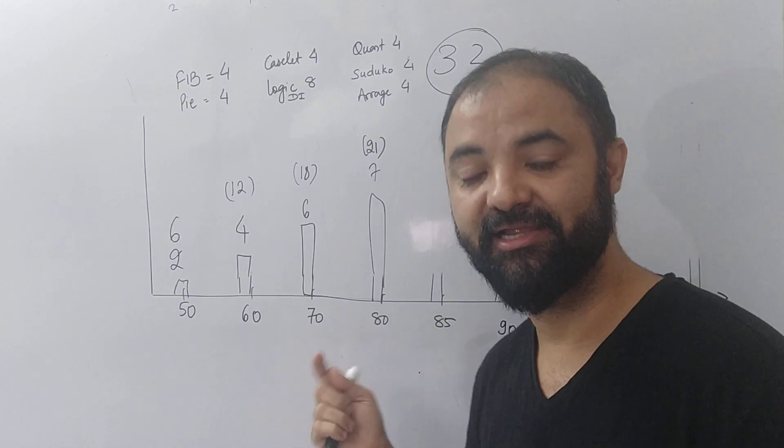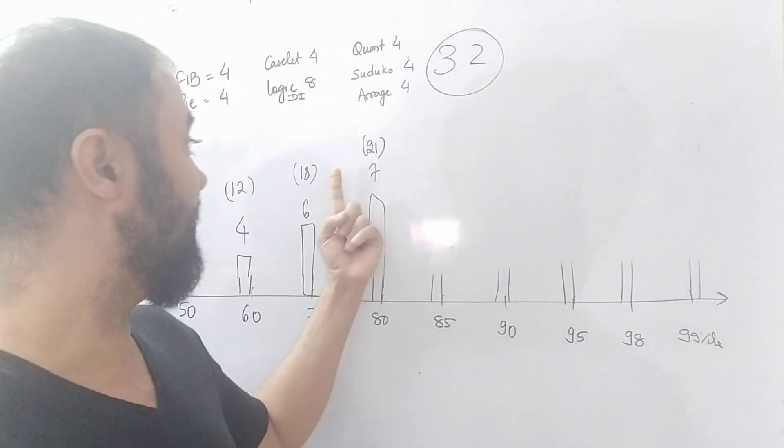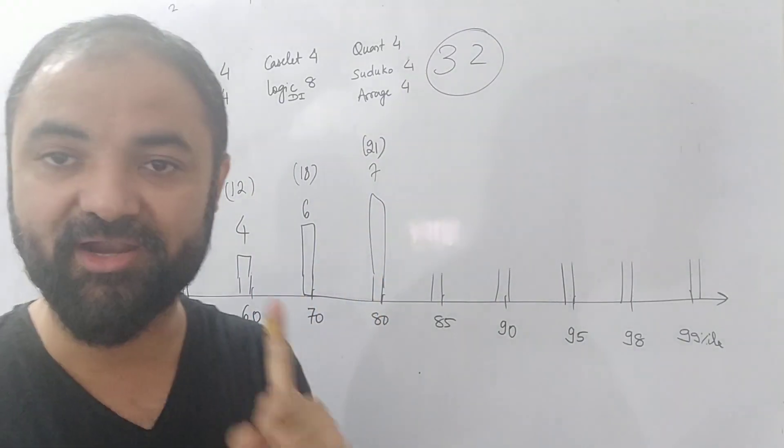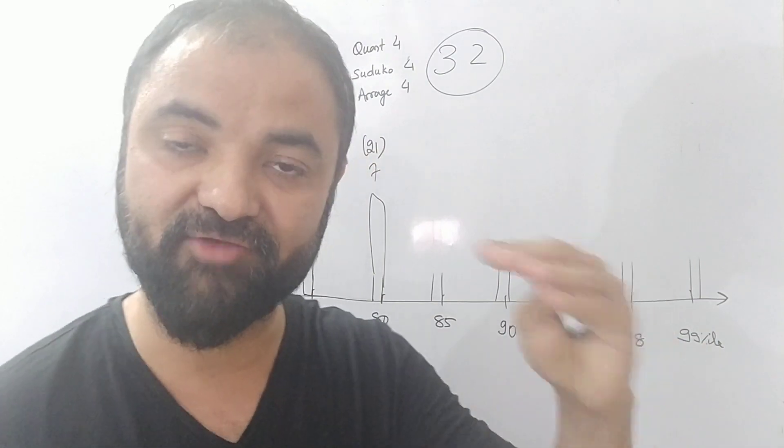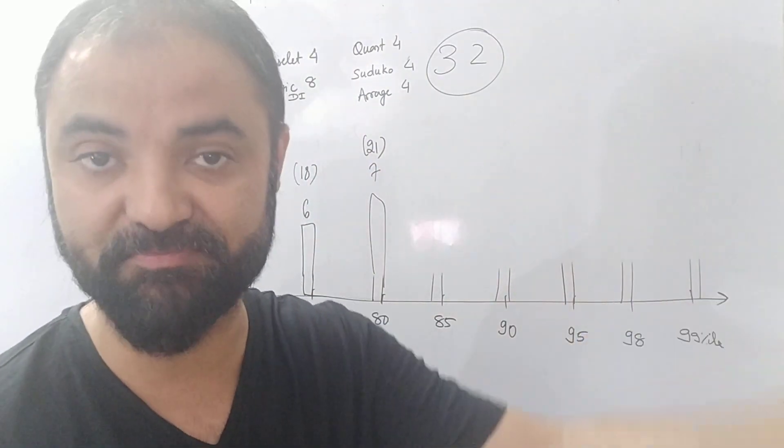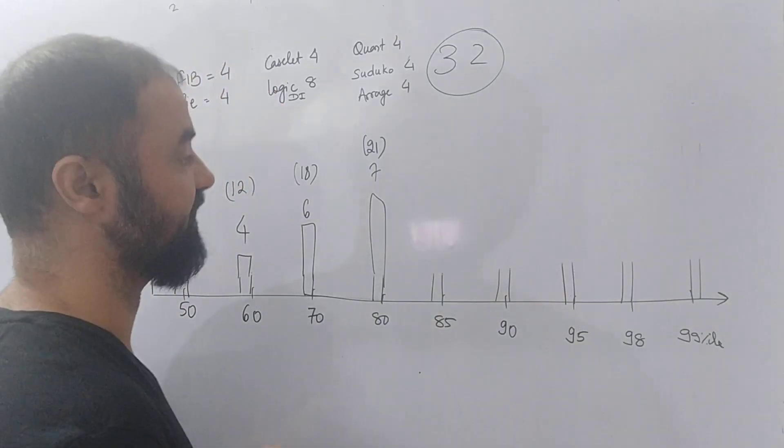Look at here, 7 at 80 percentile. 10 percent people out of 2 lakhs, 20,000 people are in this score. So 1 question correct means 20,000 people are there. So if you do 1 question correct, you are beating 20,000 people, so the scores are going up. This is to make you understand what kind of competition you are looking at.